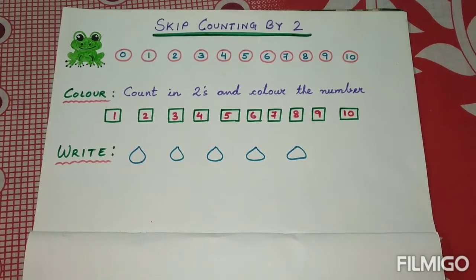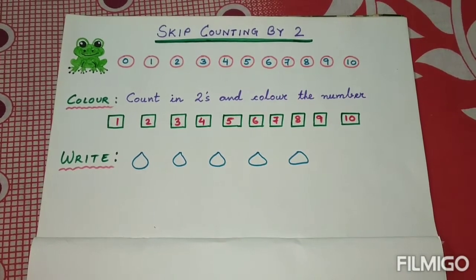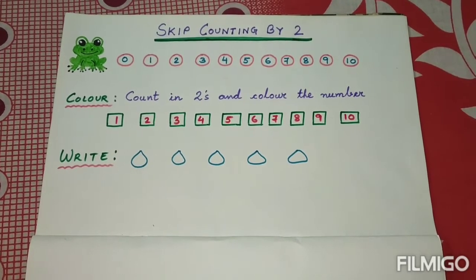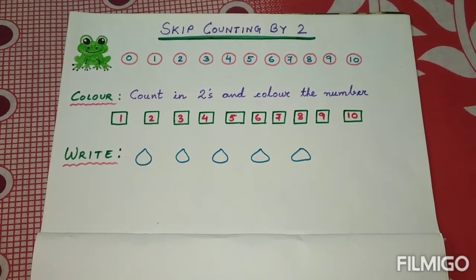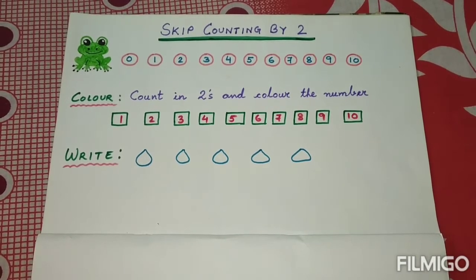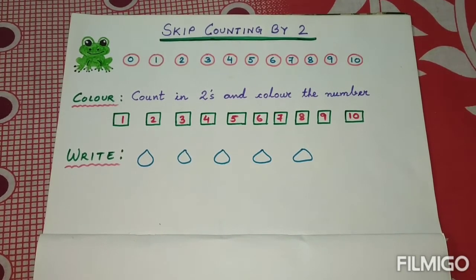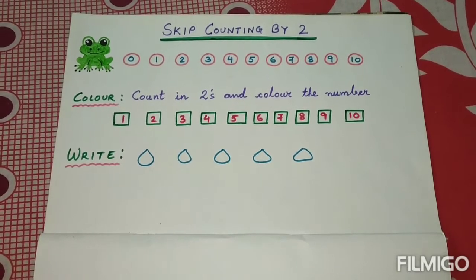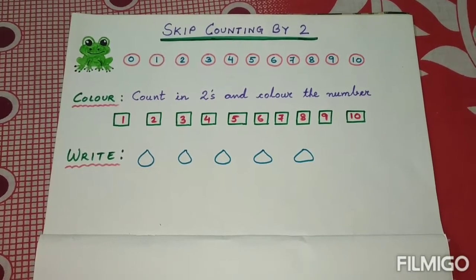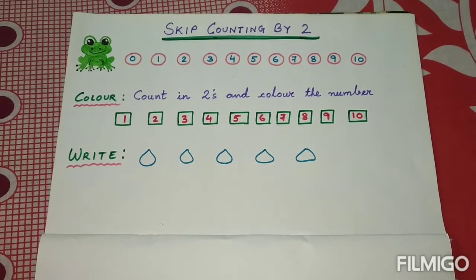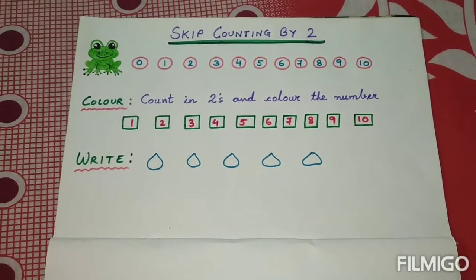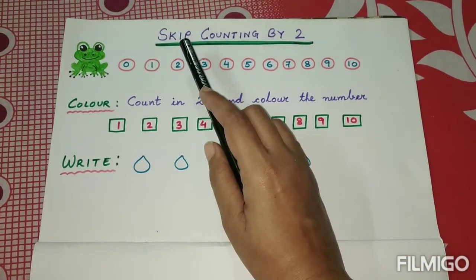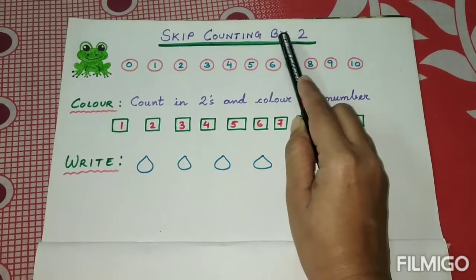We can also call skip counting as jumping — skip or jump. So as we count forward like zero, one, two, three, four, five, and in between these numbers if we skip some numbers, that is called skip counting. Today's topic is skip counting by two.